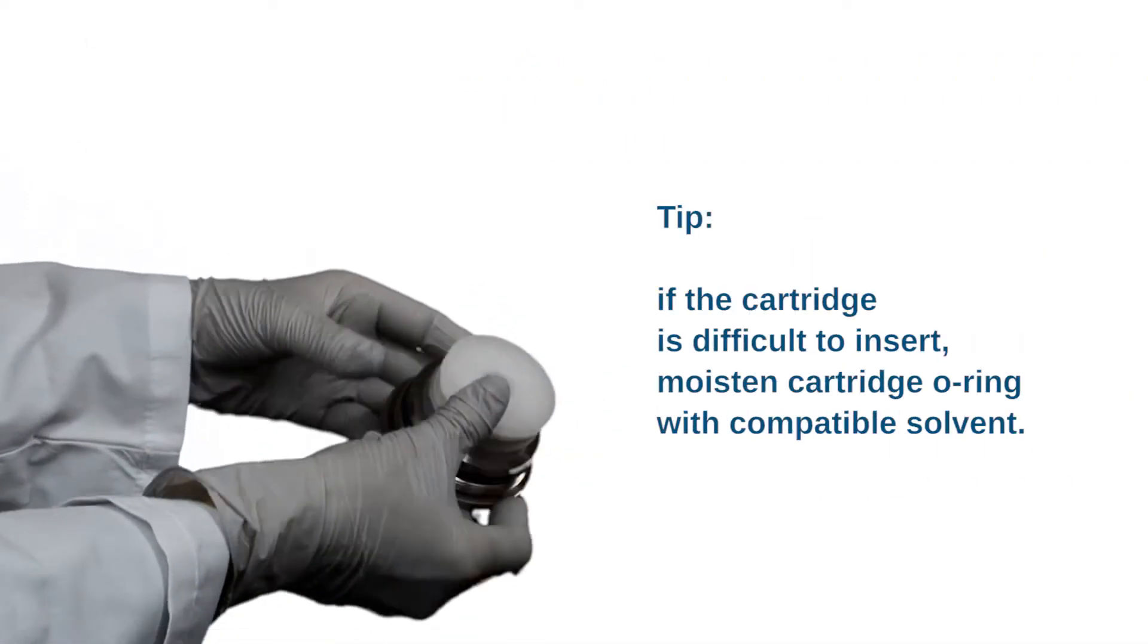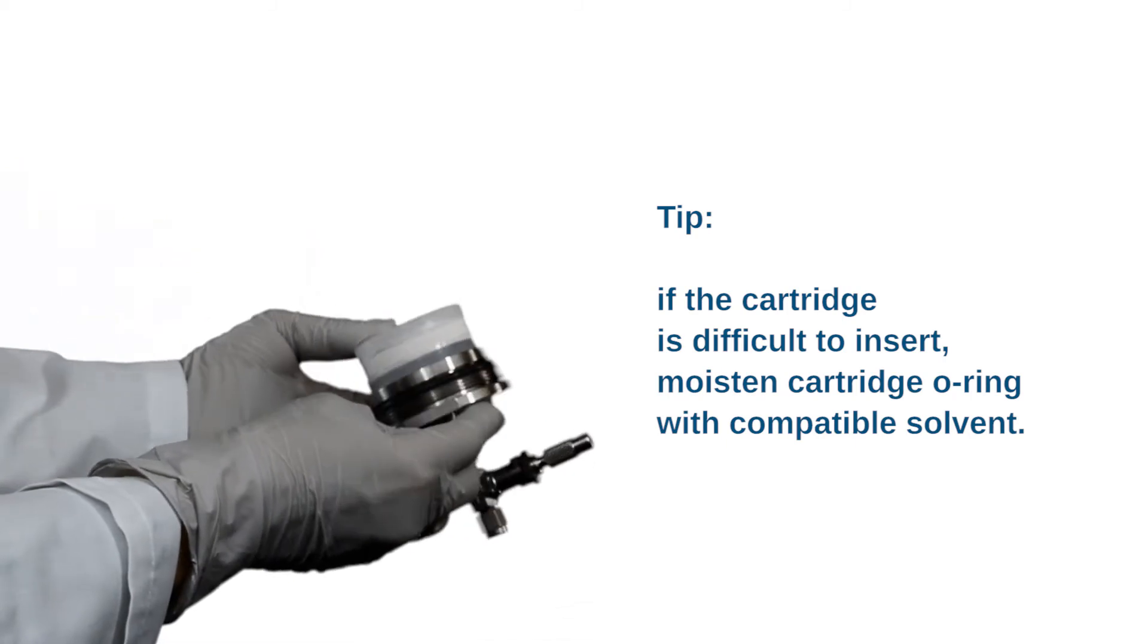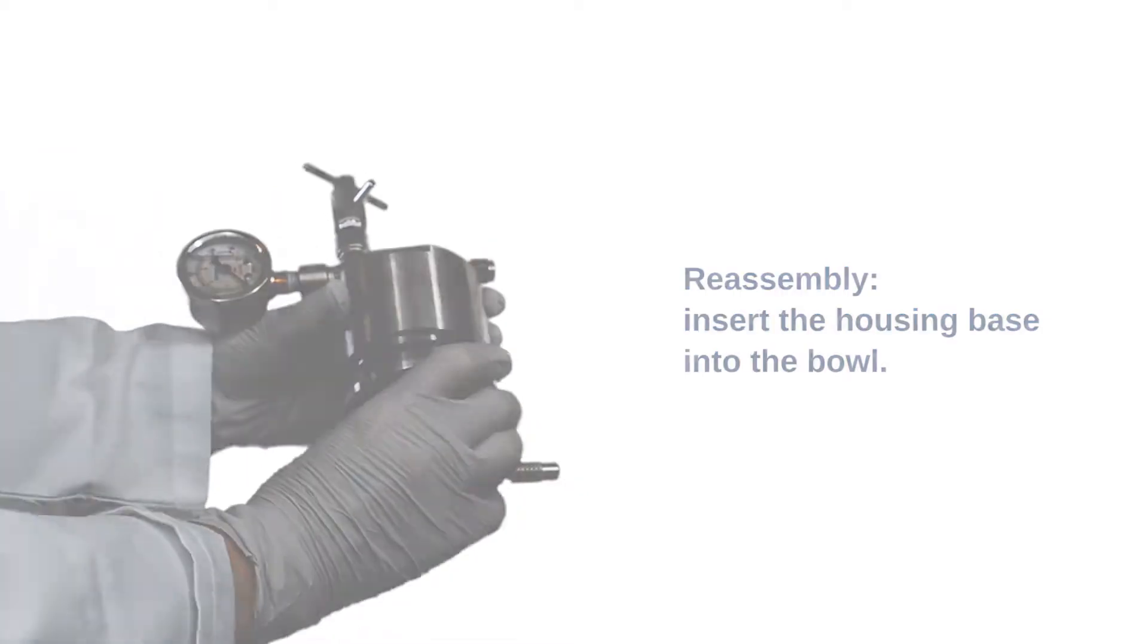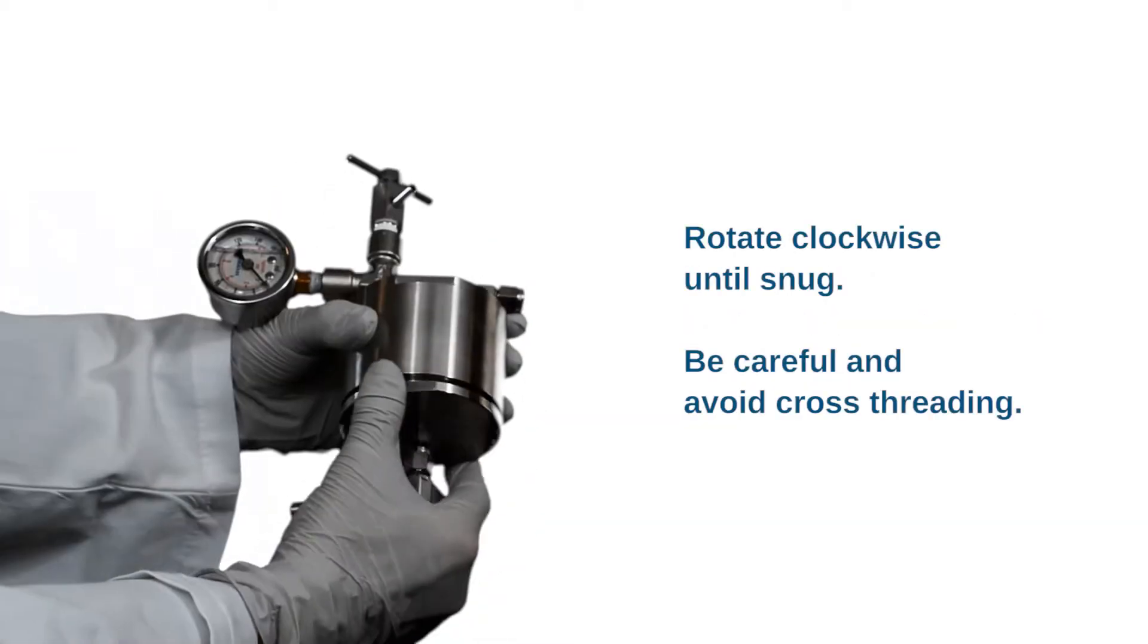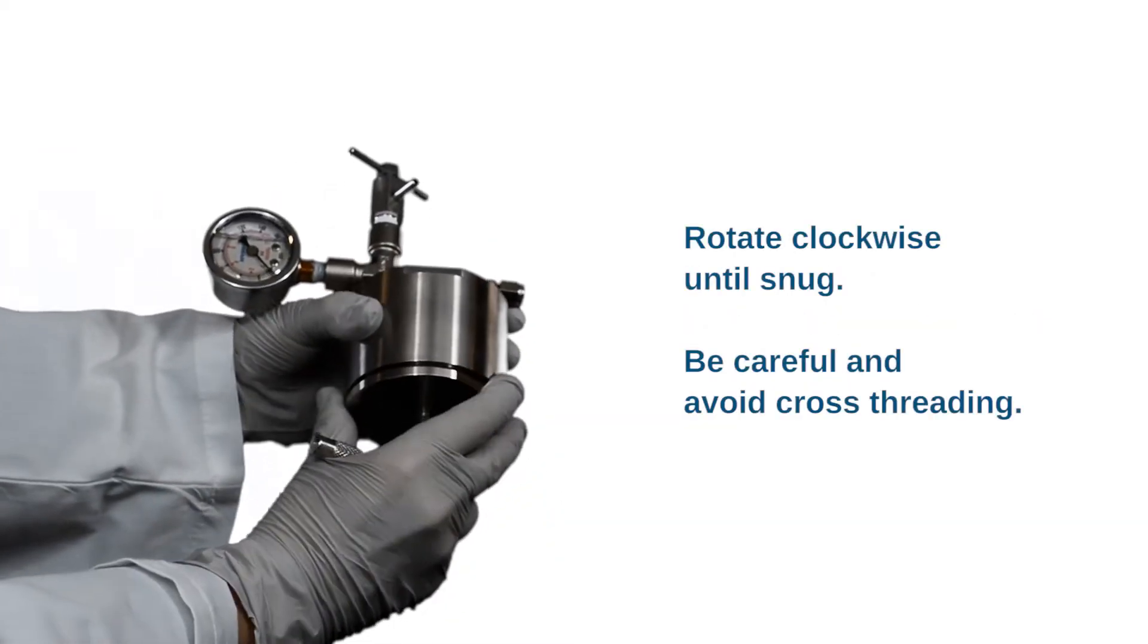If the test cartridge is difficult to insert, moisten cartridge o-ring with compatible solvent. Re-assembly: Insert the housing base into the bowl. Rotate clockwise until snug. Be careful and avoid cross-threading.